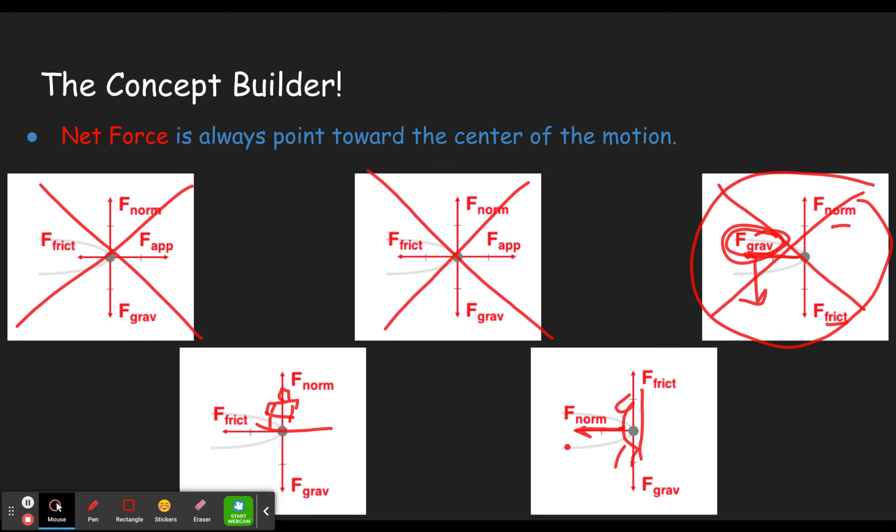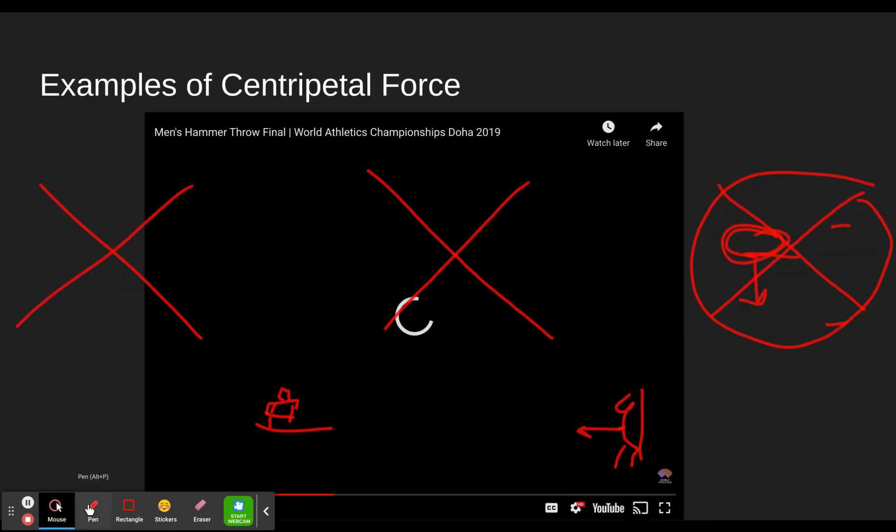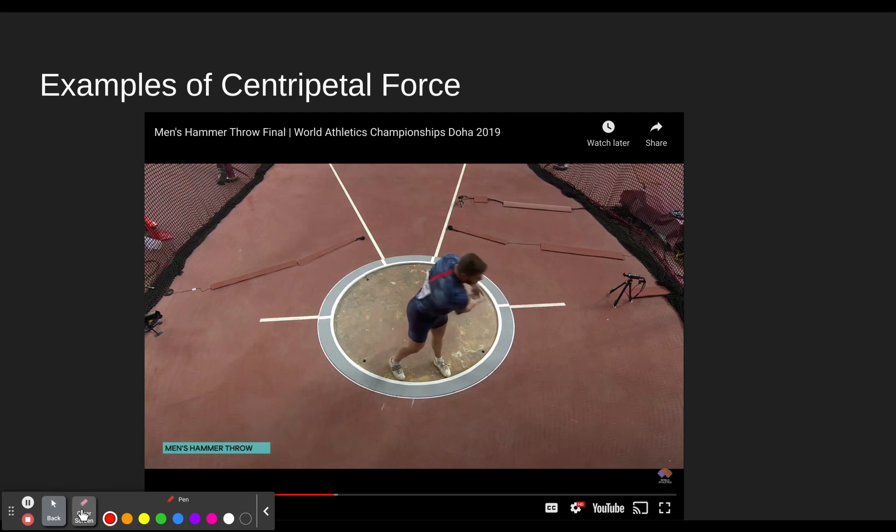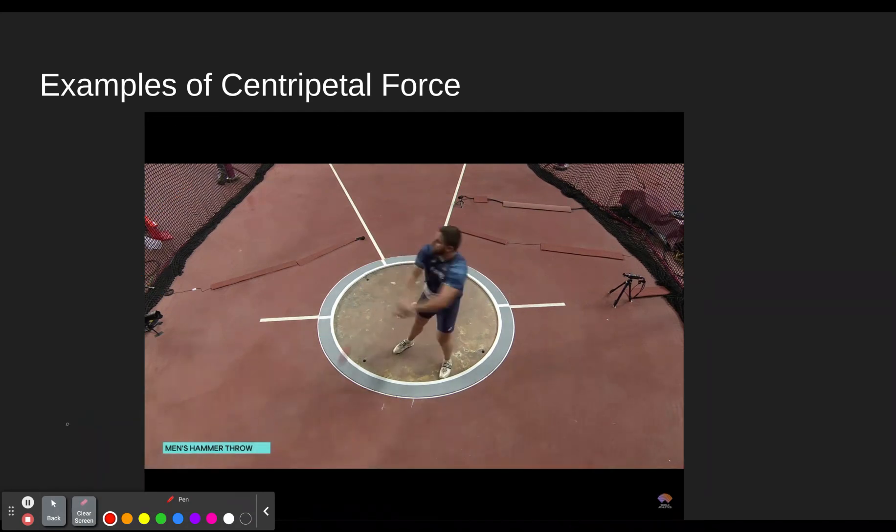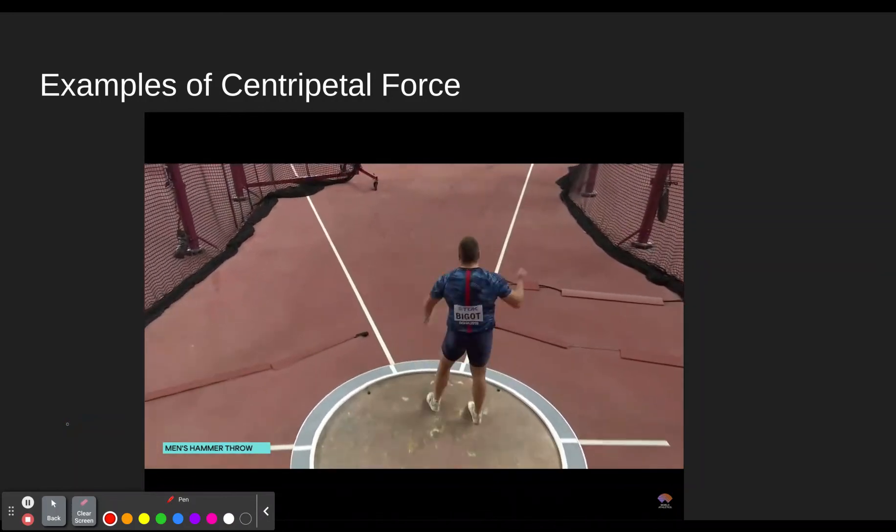All right, let's do a couple of examples. I chose to do them with videos because it's easier to picture. So I highly recommend when you read the words in your description, try to picture what's going on, close your eyes, visualize it if you need to. We looked at these videos in an earlier concept builder. So here we have a hammer thrower. He's going to spin his ball and we're going to look at somewhere in this situation here, what the forces look like.